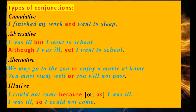Now types of conjunction. Cumulative means just combining — simple combining. I finished my work and went to sleep. That is: I finished my work; I went to sleep. Just combine them: I finished my work and went to sleep.